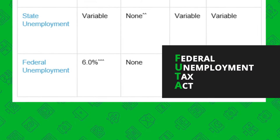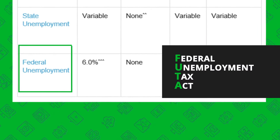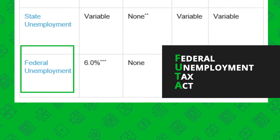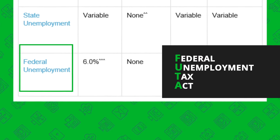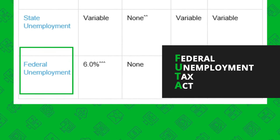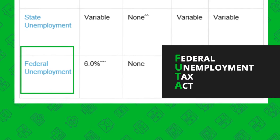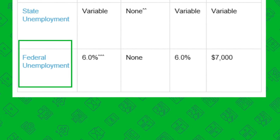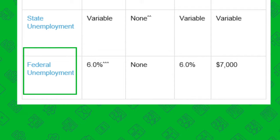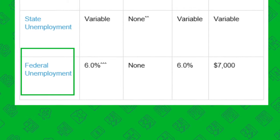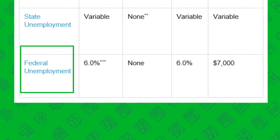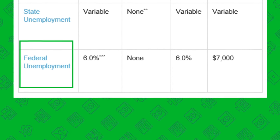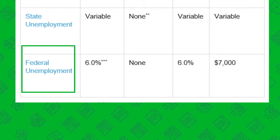Let's talk about federal unemployment tax. Not to be confused with FICA, FUTA taxes are paid only by the employer to help the federal government assist states with their unemployment program if needed. FUTA is a 6% tax based on the first $7,000 of wages you pay each and every employee.